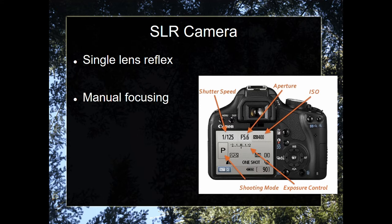I wanted to start with SLR cameras. SLR stands for single lens reflex. These are cameras that have lenses where you control the focus yourself, as opposed to a point-and-shoot camera. Nowadays we have the DSLR — digital single lens reflex. They do still have manual focusing. With all SLR cameras you have a lot of control: control over your shutter speed, your aperture or f-stop, your light exposure, and with digital cameras today, a lot of other interesting settings I'll go through today.